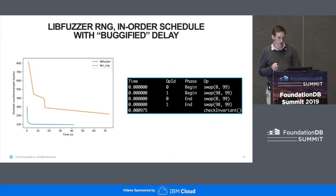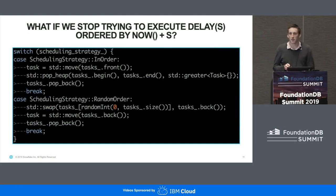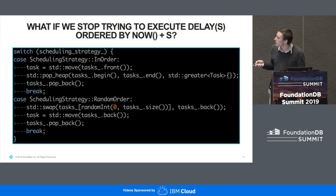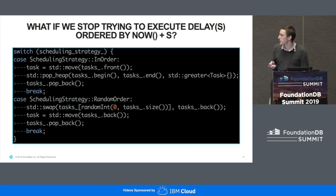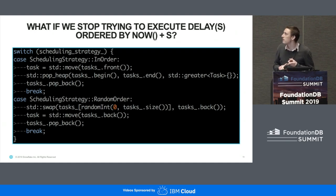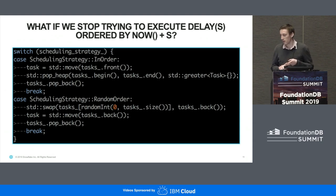Another way we can get unlucky is if we stop trying so hard to execute things in order — if we just ignore time. Currently we've got a priority queue that executes tasks ordered by the time they're scheduled. If we just pick a random task, that also finds the minimal counter example really quickly, for a couple of reasons: one is that it's a lot faster so we can run more simulations, and the other is that we took away the part where the delay needs to be bugified.